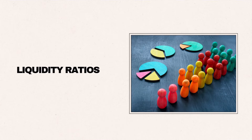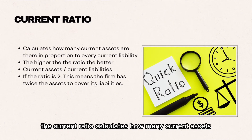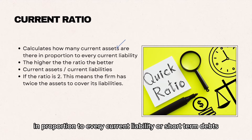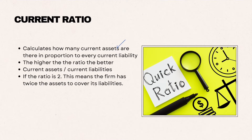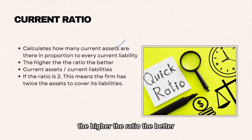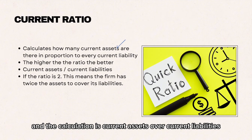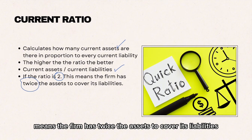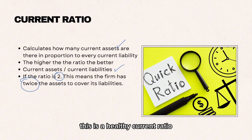Liquidity ratios. The current ratio calculates how many current assets or short-term assets there are in proportion to every current liability or short-term debt. The higher the ratio, the better. The calculation is current assets over current liabilities. A ratio of 2 means the firm has twice the assets to cover its liabilities — this is a healthy current ratio.